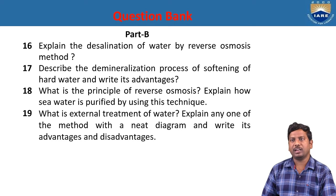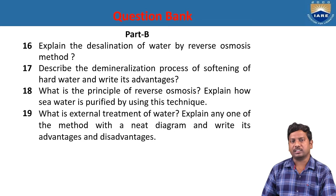Describe the demineralization process for softening of hard water and write its advantages. Demineralization means the water sample is freed from all dissolved salts. The advantage of the ion exchange process is that it removes both cationic and anionic impurities, hardness reduced to 0 to 2 ppm, and the water is suitable for boilers in industries.